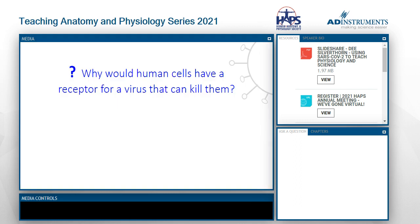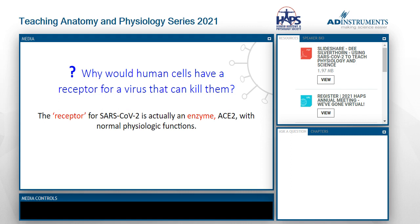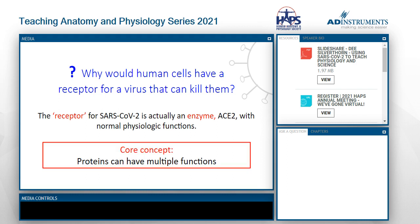The question I ask students is: why would a human cell have a receptor for a virus that can kill them? We've been talking about receptors for signal molecules or receptor-mediated endocytosis, but why would we have a receptor for something that can kill us? The answer is it's not really a receptor. What functions as a receptor for SARS-CoV-2 is actually an enzyme — angiotensin converting enzyme 2 — that has normal physiological functions. The virus is hijacking the enzyme, causing it to function in a different way.